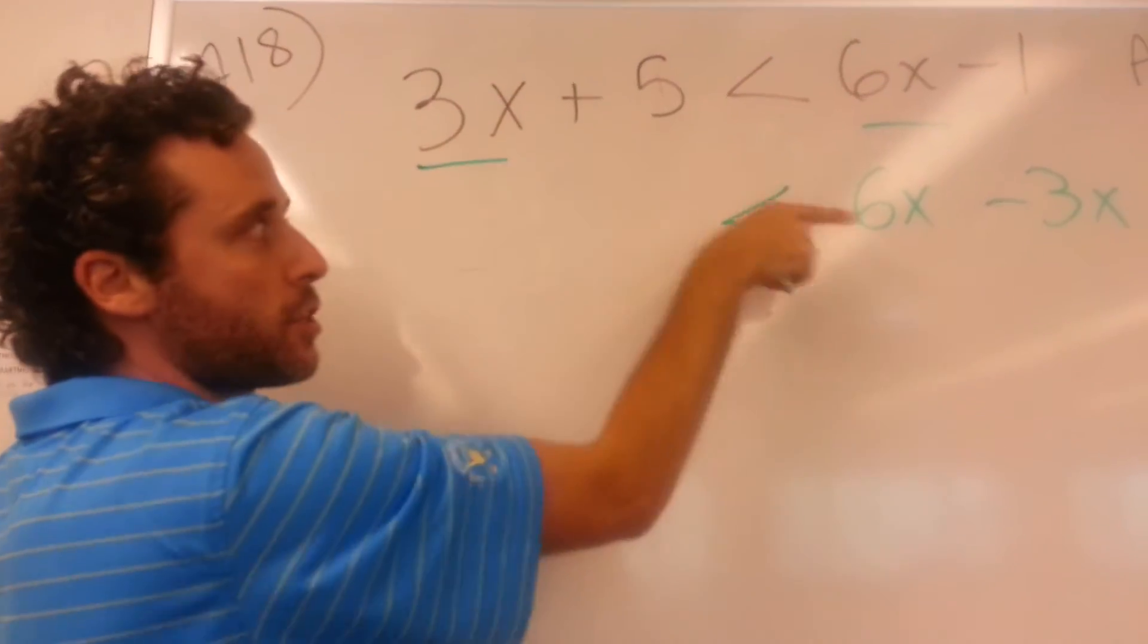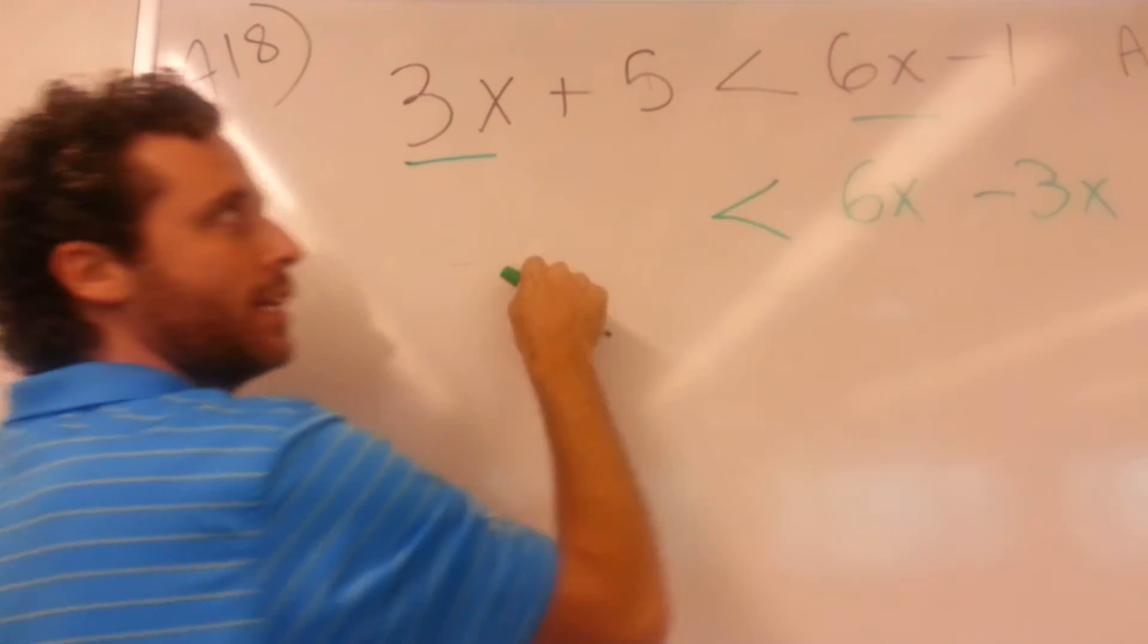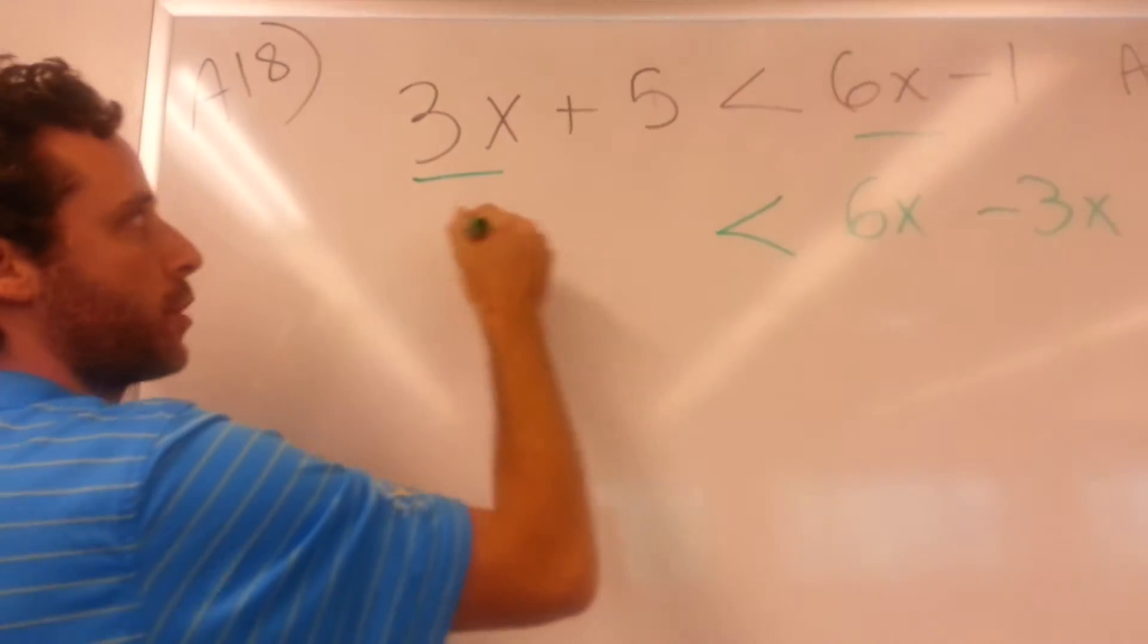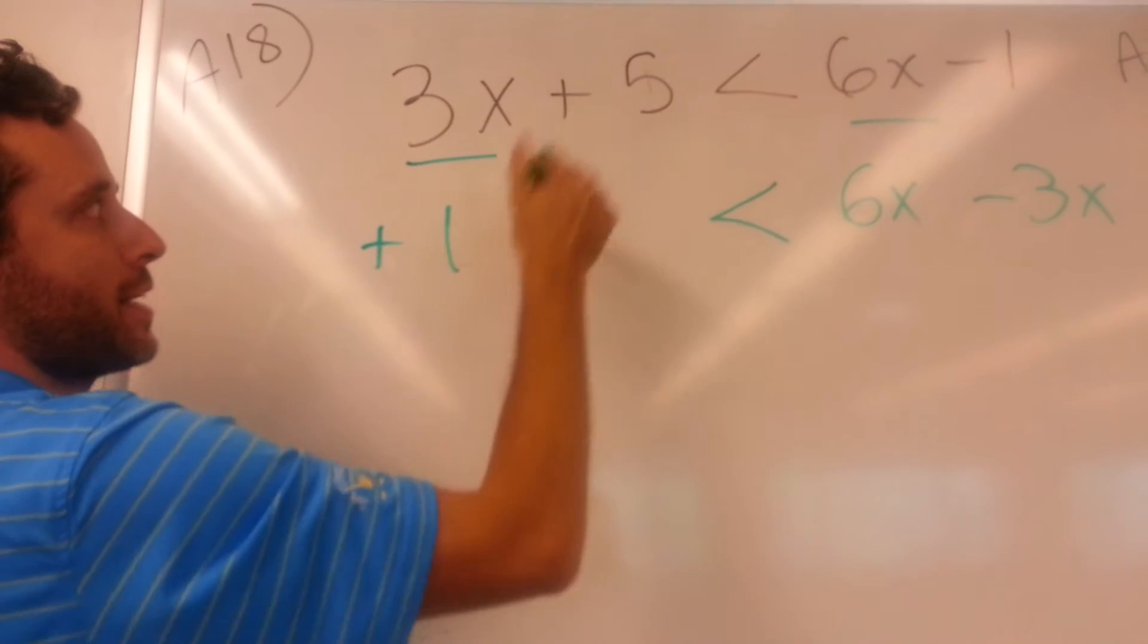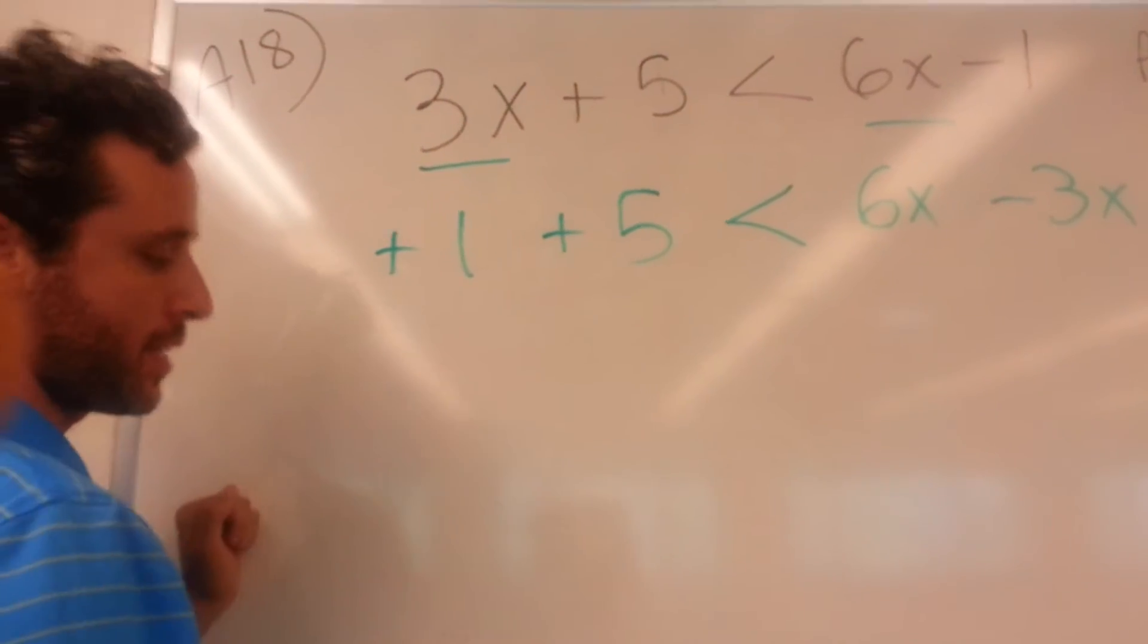But then if we're bringing the x's to the right side, I'm going to bring the numbers to the left side. So that negative one is now going to turn into a positive one. And then this positive five, that's not moving sides, so that's going to stay as a positive.